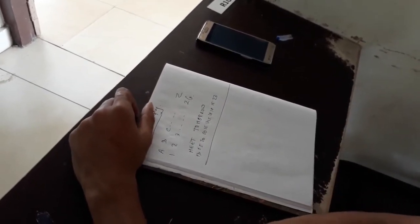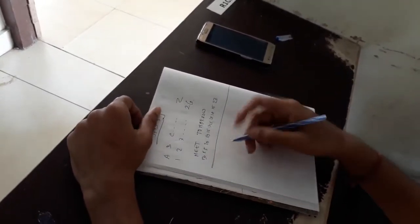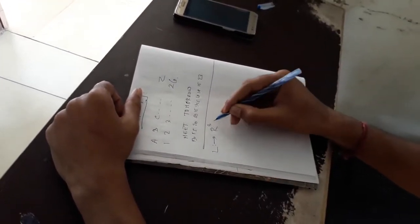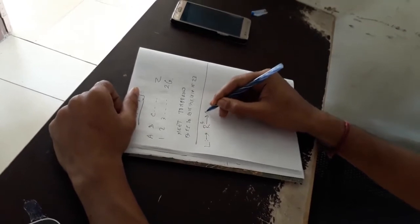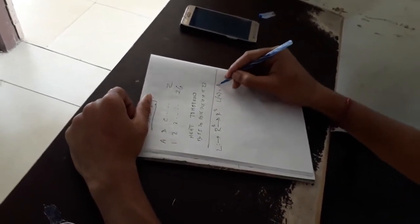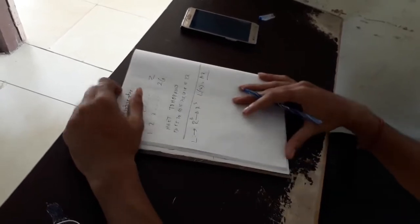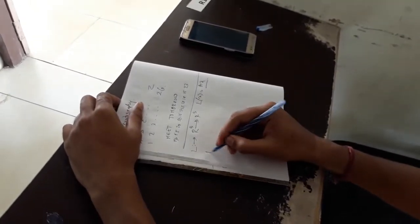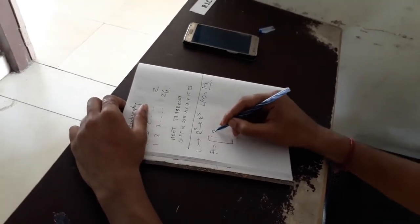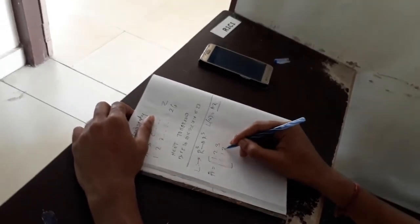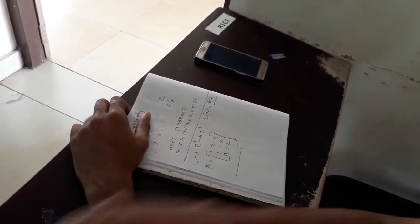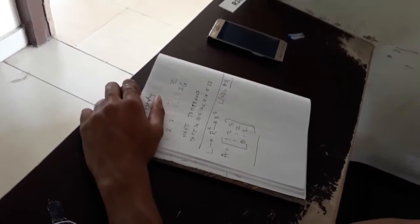Now, here we use the linear transformation. L of R cube maps to R cube, L of X equals A into X. Here we have considered an arbitrary A that will be given in question. Here it is 1, 2, 3, 1, 1, 2, 0, 1, 2. This is the value of A. This will be given in question.